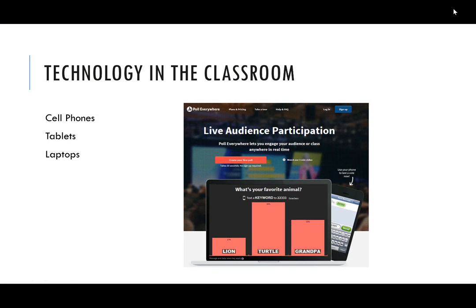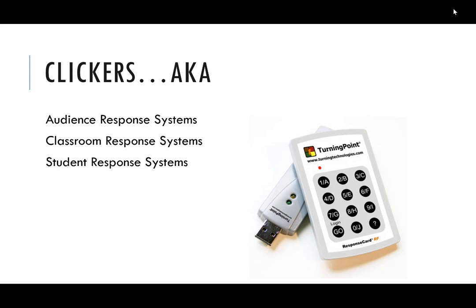Poll Everywhere is essentially a technology that allows students to use their cell phones, tablets, laptops, or basically any mobile device as an audience response system or a clicker. Clickers have been around and used in classrooms for well over a decade. They're sometimes called audience response systems or student response systems.